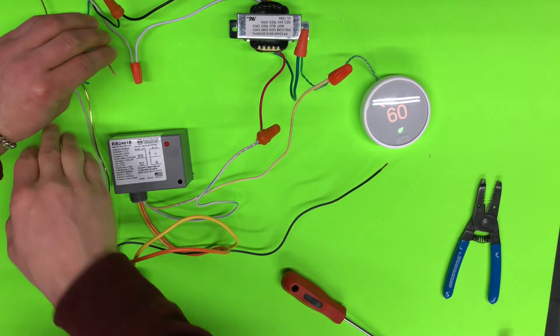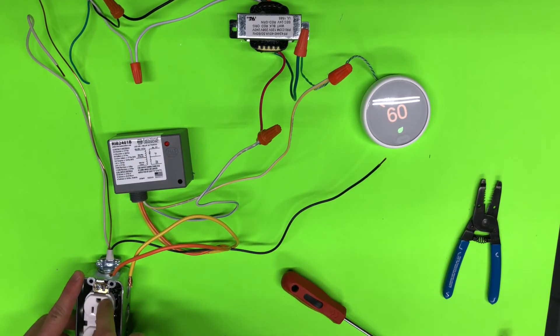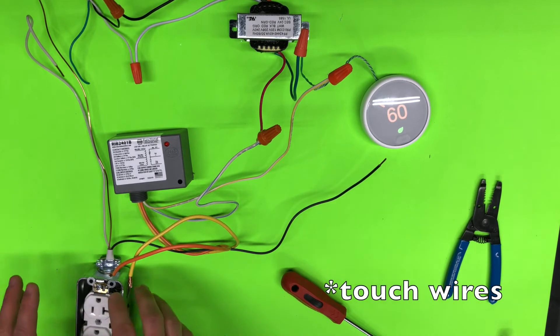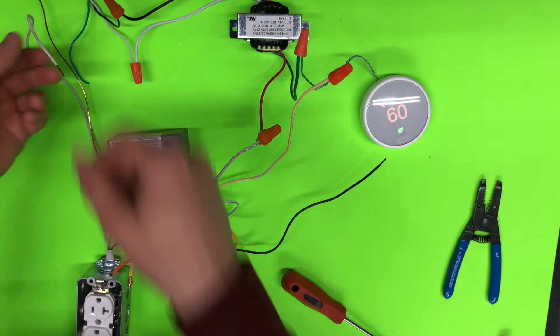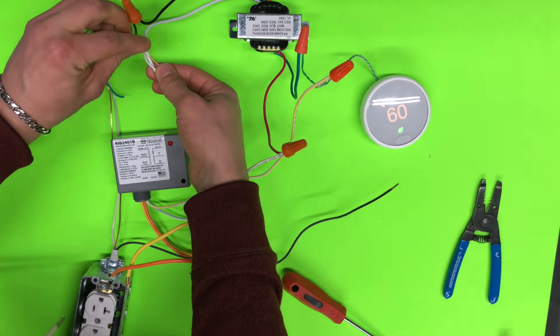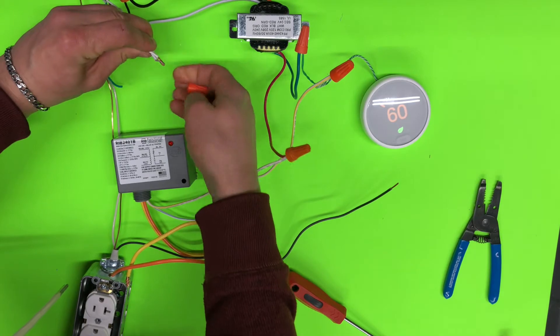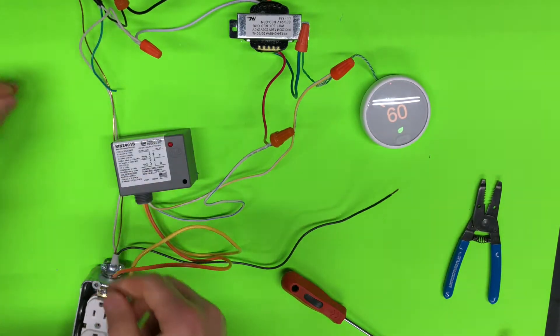So in this case, if relay is not energized, I will not have any power here in the outlet. So if I touch it, it's not going to shock me. It's only going to be powered if relay is on. So let's connect white wire, neutral wire here.